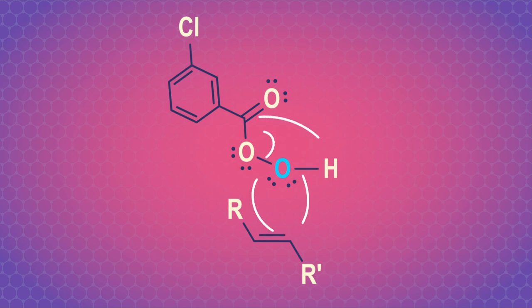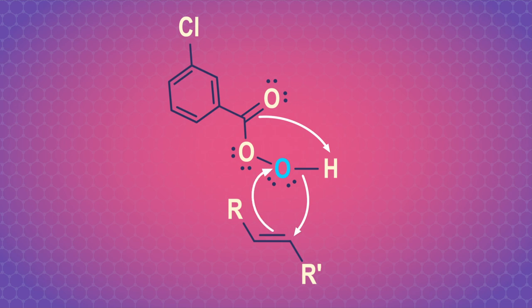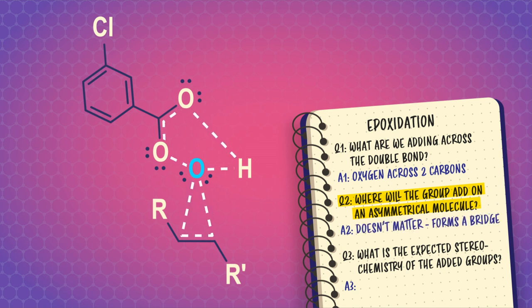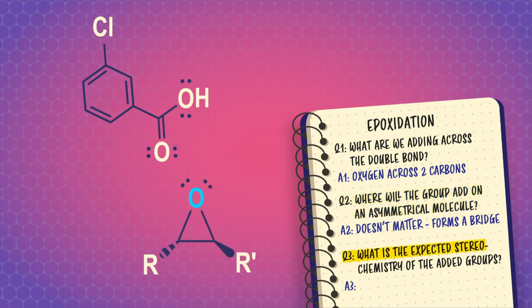Basically, the alkene's double bond forms a strained bridge with the blue oxygen at the same time the other bonds break on MCPBA. I like to start with the double-bonded oxygen in MCPBA and attack the proton, then use the electrons from the oxygen-hydrogen bond to attack the alkene. The alkene attacks back, and the bond to the blue oxygen that breaks forms a new carbonyl. Because we're only adding one atom and it's bridged, the answer to question 2 is it doesn't matter — essentially the same group is added to each side. And because everything is attached at once in a concerted reaction, we always have syn addition. That's our answer to question 3.